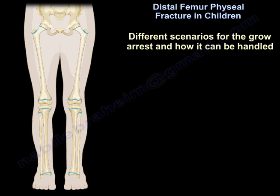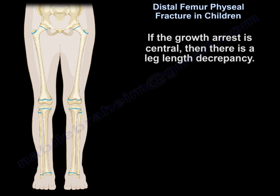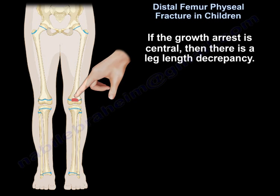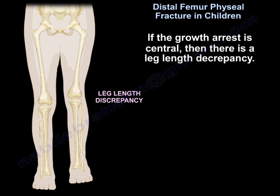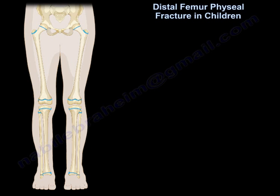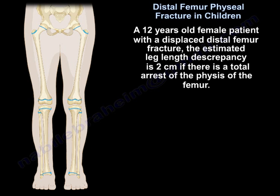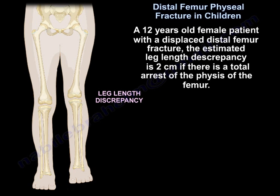There are different scenarios for growth arrest and how it can be handled. If the growth arrest is central, then there is a leg length discrepancy. For example, a 12-year-old patient with a displaced distal femur fracture may have an estimated leg length discrepancy of 2 centimeters if there is a total arrest of the physis of the femur.